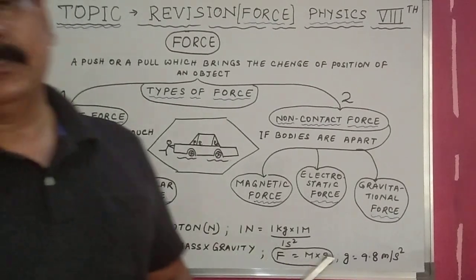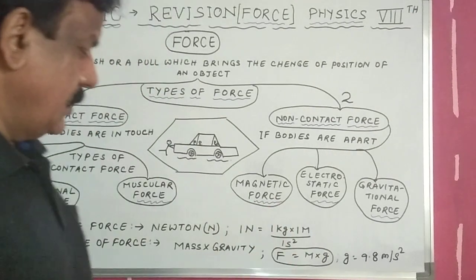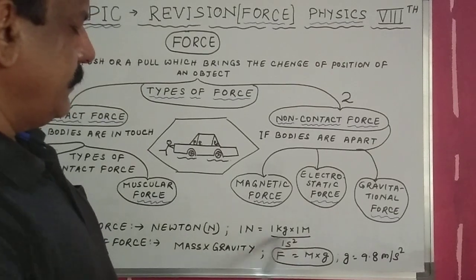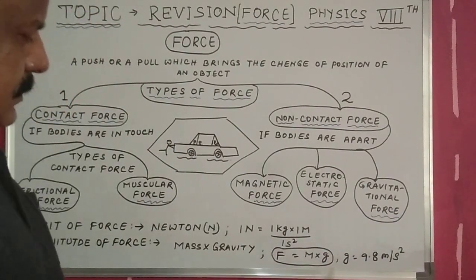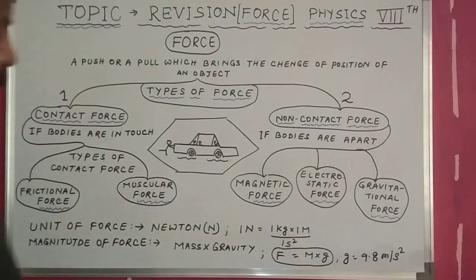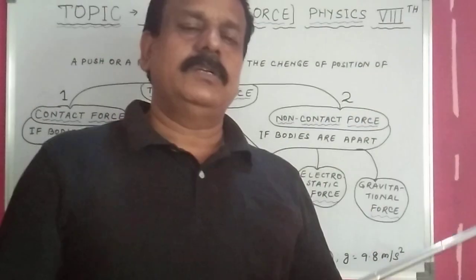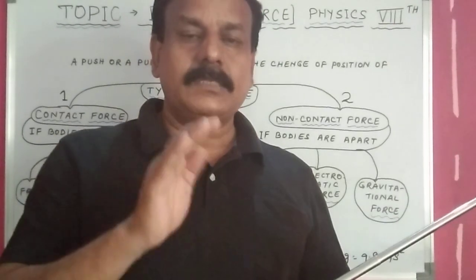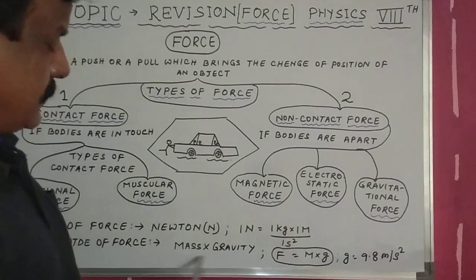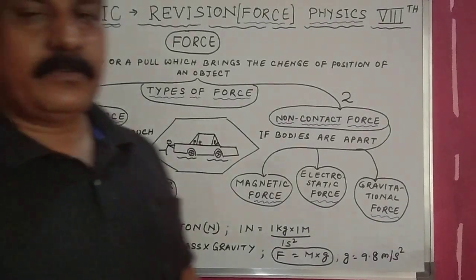The unit of force is newton, because force was discovered by Newton. One newton equals one kilogram multiplied by one meter divided by one second squared. The magnitude of force is found using the formula: Force = mass × acceleration, or Force = mass × gravity, where g stands for gravitational acceleration.